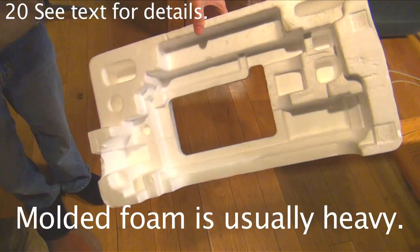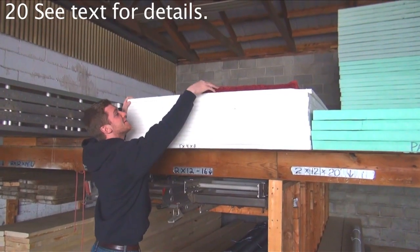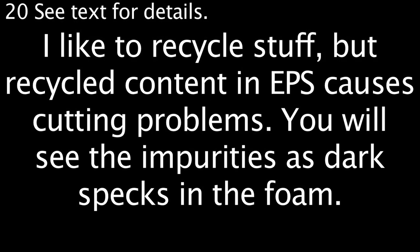I've already mentioned why I don't use molded packaging foam anymore, but it will work in a pinch. The white sheet sold as building insulation can be good, but if it has recycled content, it can cause distortions when the wire hits impurities.